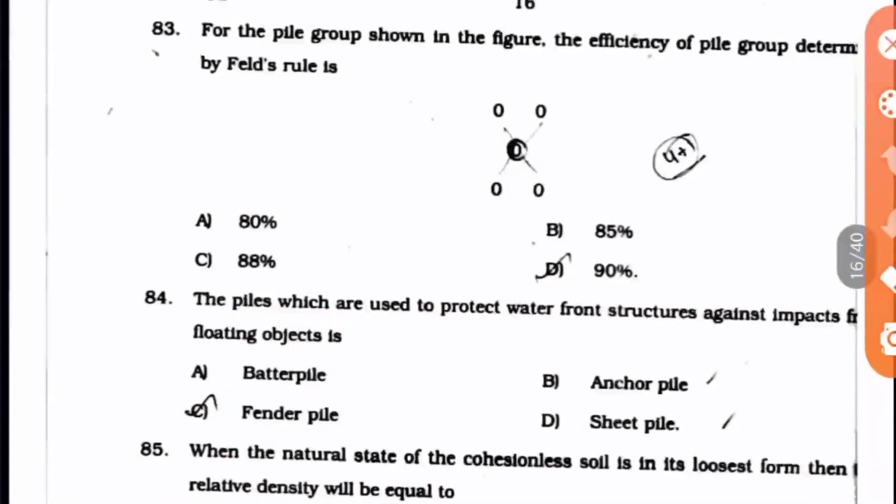Question 83: For the pile group shown in the figure, the efficiency of the pile group determined by Fell's rule is what?